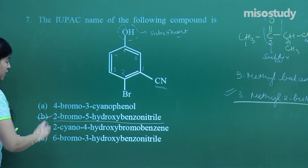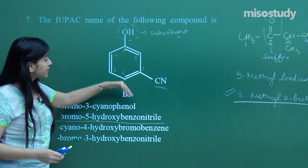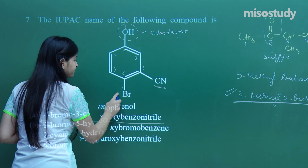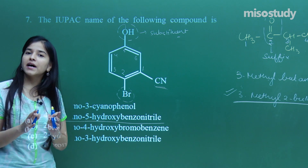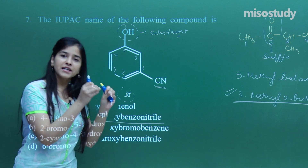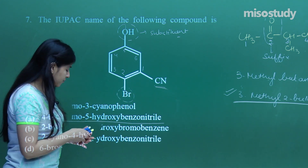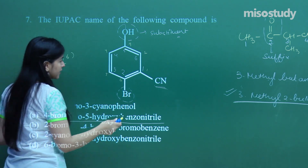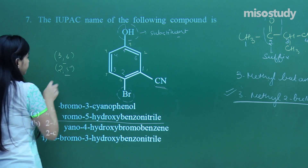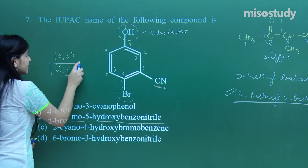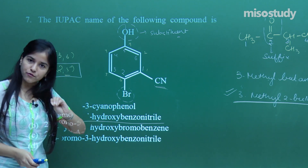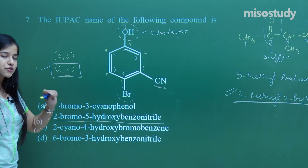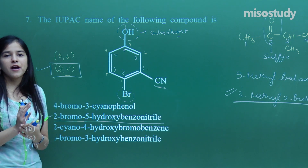I moved toward the bromine direction rather than the OH direction in order to assign the least possible number. Here both bromine and OH are treated as substituents — two substituents — so I need the least possible set of numbers: 2 and 5. This gives a lower set compared to going the other way. It is a slightly typical question so you need proper knowledge about it.